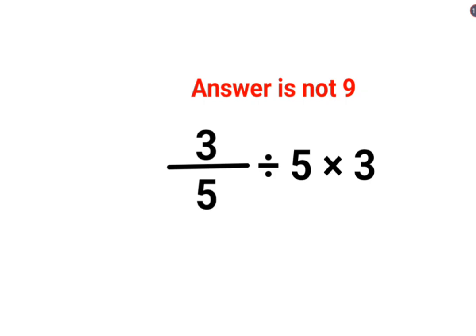Please understand, 3 upon 5 divided by 5 multiplied by 3. You cannot cancel this and get 3 multiplied by 3 equals 9. No, that's not how these things work.